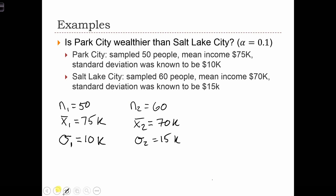So let's conduct our test. Step one is to state the null and alternative hypotheses. The null hypothesis in this case is just that μ1 equals μ2. And the alternative hypothesis was that Park City, μ1, has a higher average income than Salt Lake City, μ2.